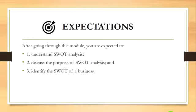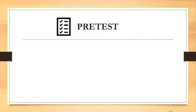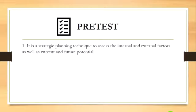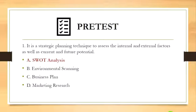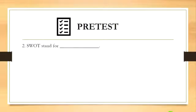Before we proceed to our lesson, we will have a pre-test first. Number one: it is a strategic planning technique to assess the internal and external factors as well as current and future potential. A) SWOT analysis, B) environmental scanning, C) business plan, and D) marketing research. The answer is letter A, SWOT analysis.